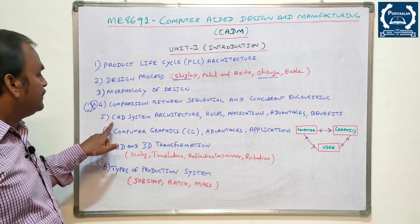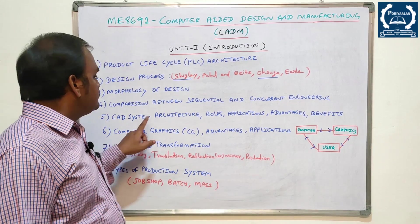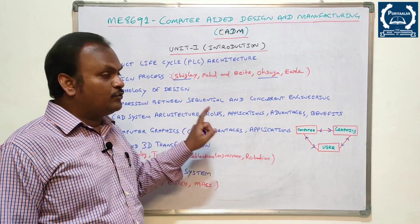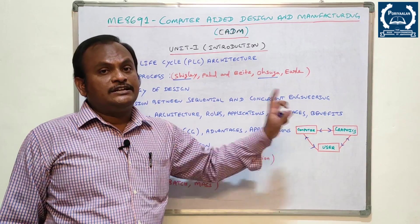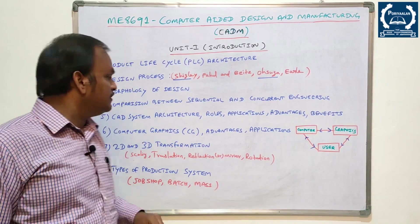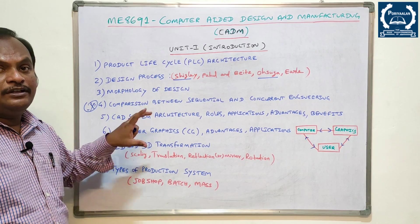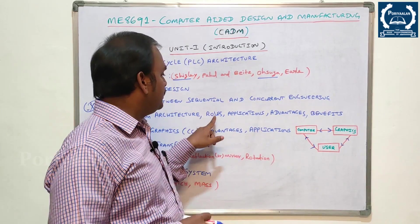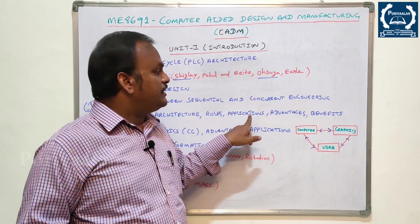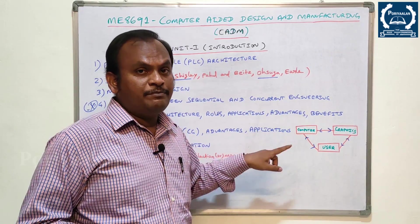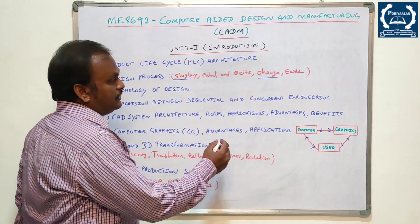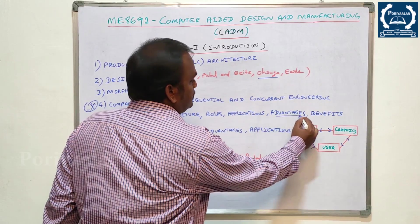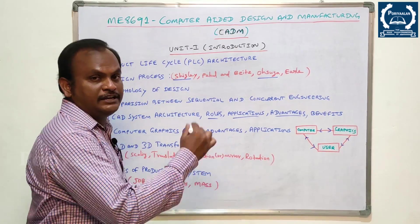The fifth question is CAD System Architecture — roles, applications, advantages and benefits. CAD System Architecture covers CAD and Computer Design, its roles, applications, advantages and benefits. You can answer applications or advantages as divisions.